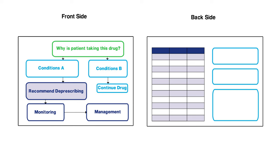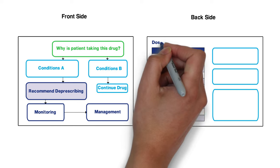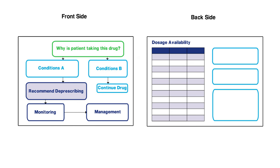On the other side of the algorithm, we've included information about the dosage availability for each medication in the targeted class, patient engagement strategies, information about the side effects of the drug class, and information about non-drug management of conditions to help reduce reliance on medications.